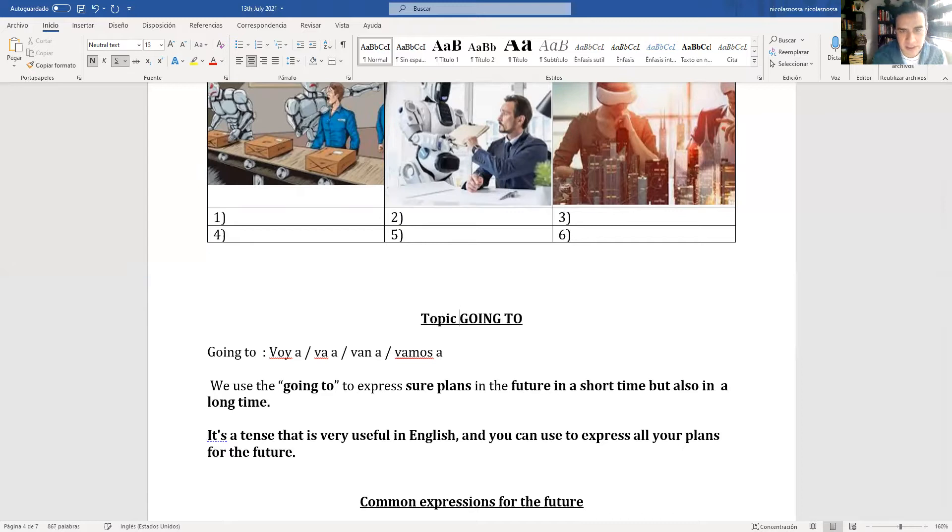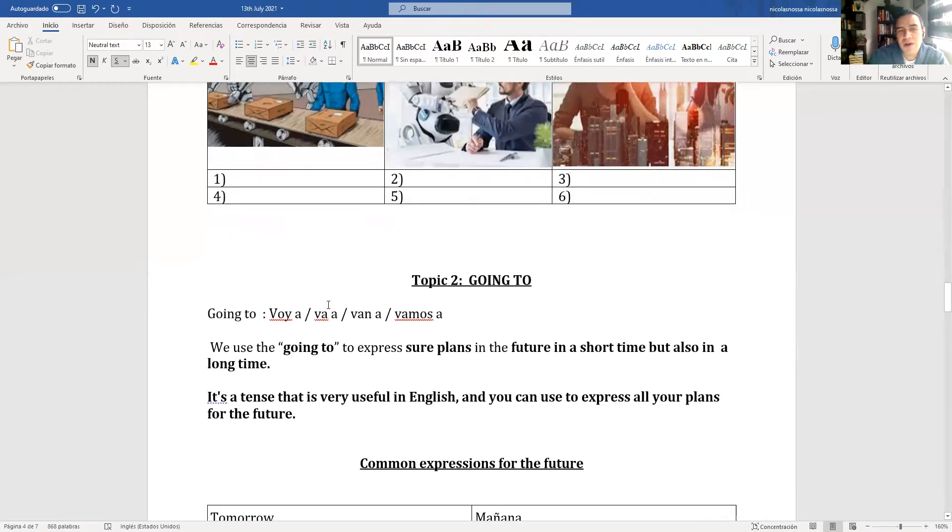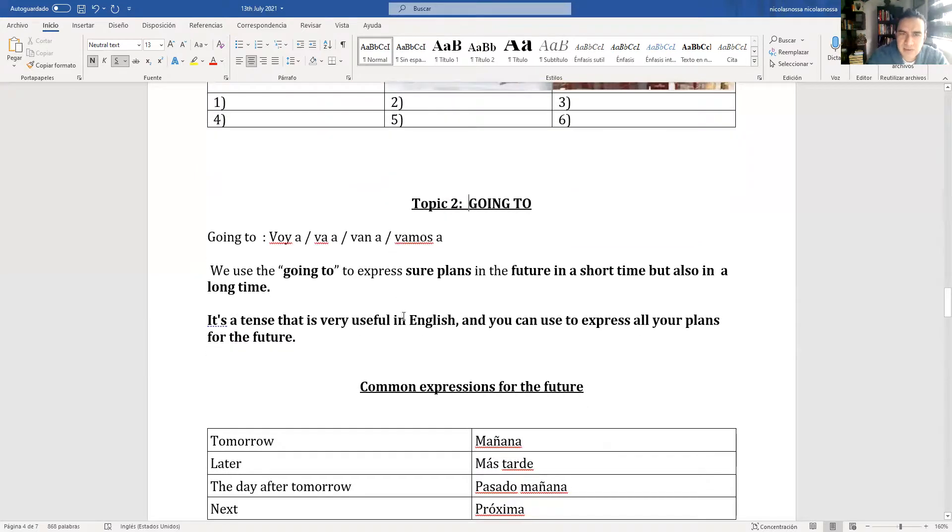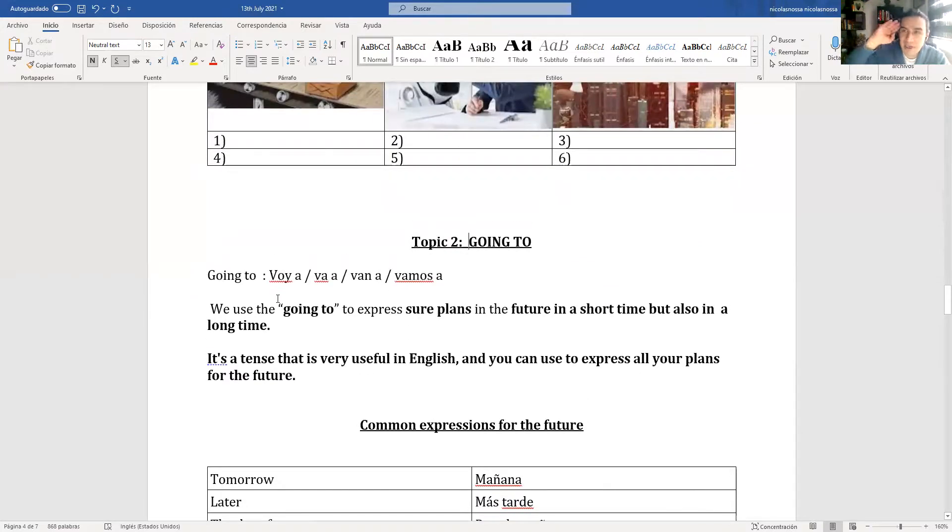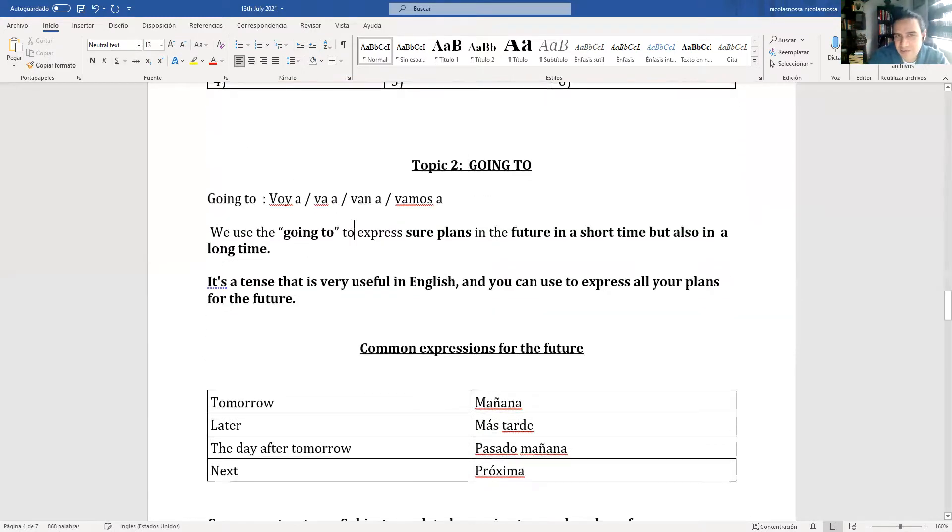The second topic guys: vamos a ver el going to. Son hermanitos, siempre se explican ambos el will y el going to porque son futuros. Hay una diferencia: will is for predictions, maybe, probably. Going to is when you're sure of your plan for the future. Voy a viajar a EEUU, ya compré los tiquetes, ya listé la maleta, tengo todo arreglado.